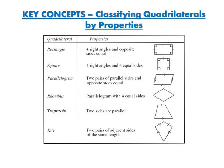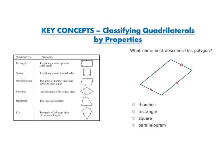You'll want to refer back to this when you look at your assignment. This question asks: what name best describes this polygon? If you look at this polygon, you'll notice that this side and that side have two hash marks, and this side and this side have one hash mark, meaning they are the same length. There are no right angles, so based on properties this would be a parallelogram because opposite sides are equal. It's not a rectangle or square, and a rhombus has four equal sides, therefore the only logical choice is parallelogram.